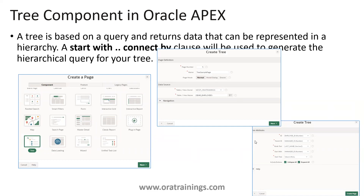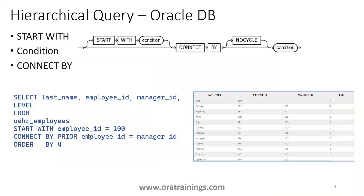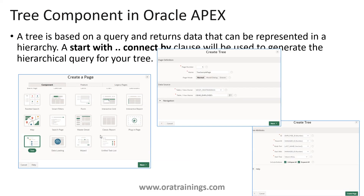We mentioned START WITH employee ID 100. Similarly here, we start with manager ID — specifically wherever the manager is null. That's how the START WITH and start tree work. For the initial tree, if you want to specify from which level to show it, and if you don't know, simply set the value to null so that it starts with a manager ID where the value is null.